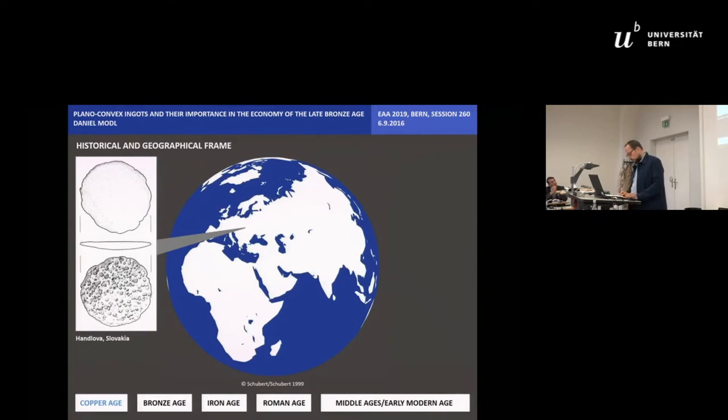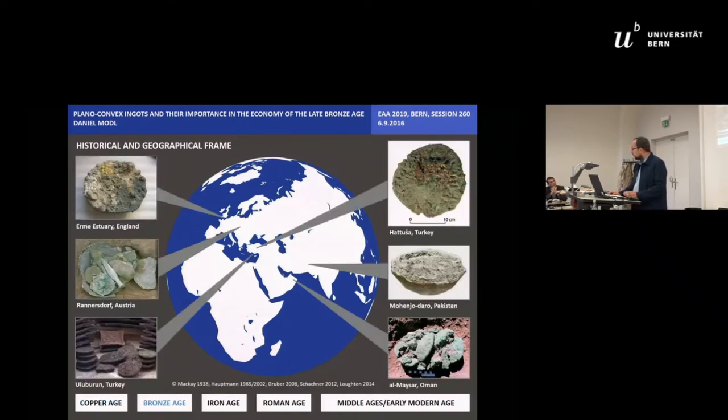Smelted copper with planoconvex shape has been known since early metallurgic times. First examples we know from copper age like this piece from the Handlova hoard in Slovakia. In the course of the Bronze Age the PCI is evidenced throughout Europe and the Mediterranean, especially in hoards and as cargo material from shipwrecks. This form was additionally used in larger number in Persian Gulf area and in settlements in the Indus Valley.